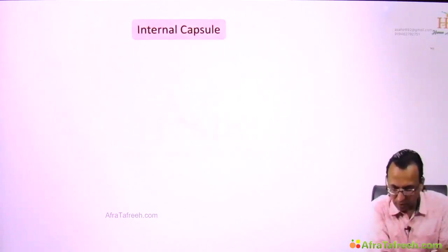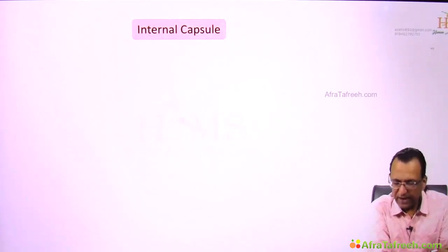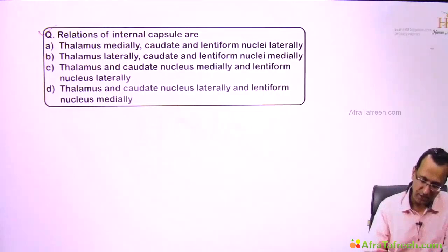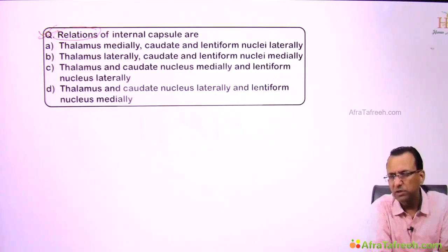The next thing we have to talk about is the internal capsule. We have some idea but we have to use this idea in a question. This is asking for relations of the internal capsule — a projection fiber dividing the corpus striatum into laterally the lentiform and medially the caudate.